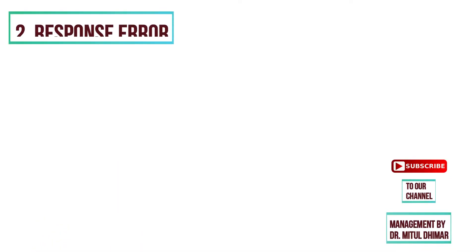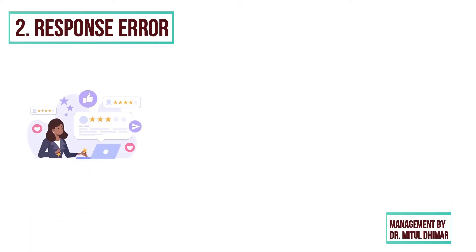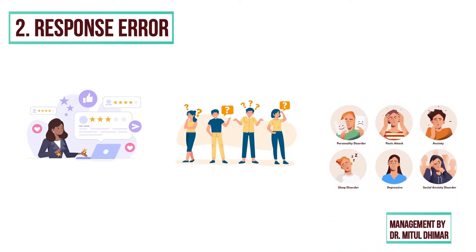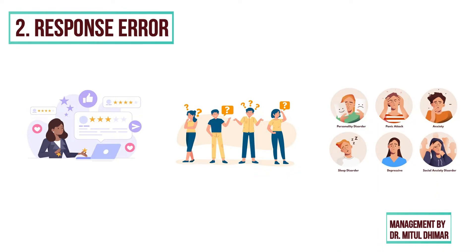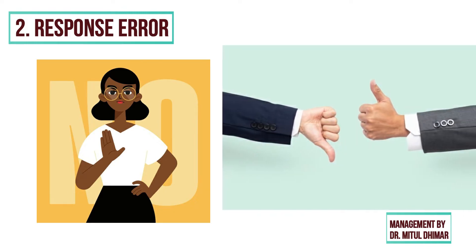The second type of non-sampling error is response error. It occurs when a respondent provides an inaccurate answer to a question. This can happen due to the respondent failing to understand the question, or may be due to fatigue, boredom, anxiety, distraction, etc. It can also occur when the respondent is unwilling or embarrassed to answer a sensitive question and provides inaccurate answers.